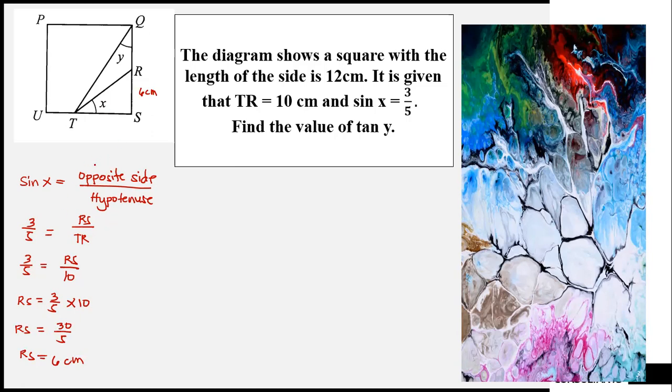Now get the length of TS. Apply Pythagorean theorem. TS is equal to square root of TR squared minus RS squared. TR squared is equal to 10 squared and RS is equal to 6 squared.